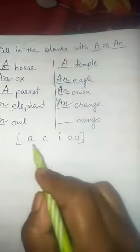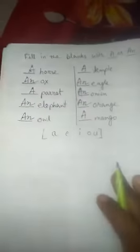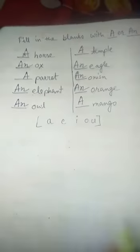Mango: m is consonant, m is not a vowel, so we put here a. So that's all for today. Hope you understand. Read regularly at home. Thank you.